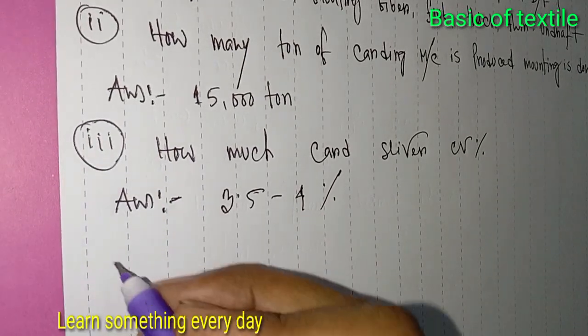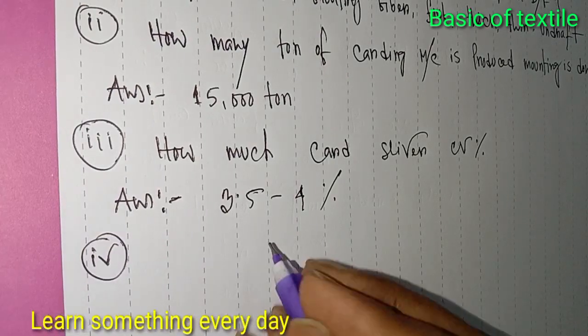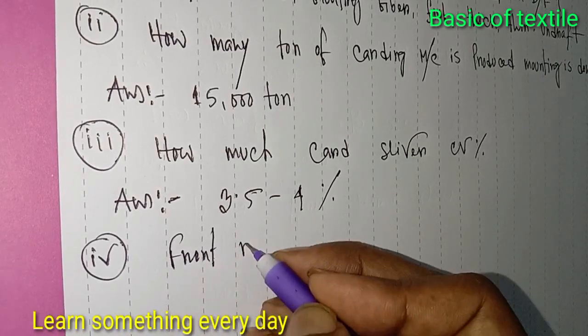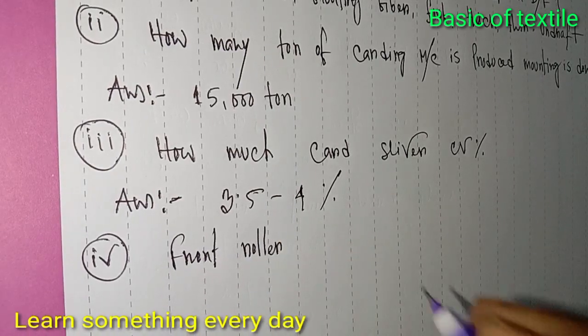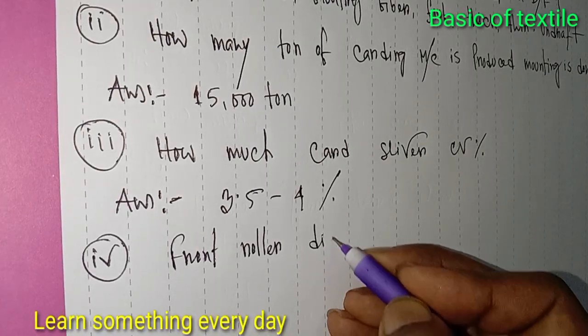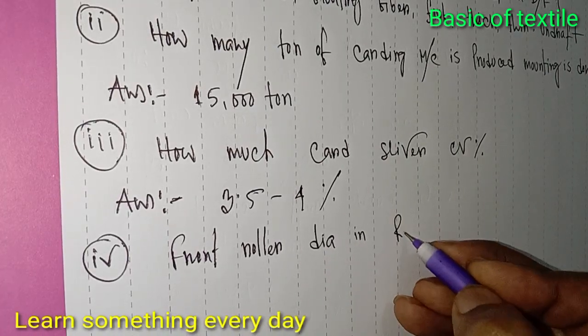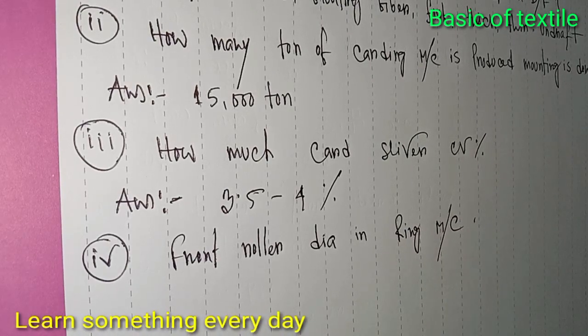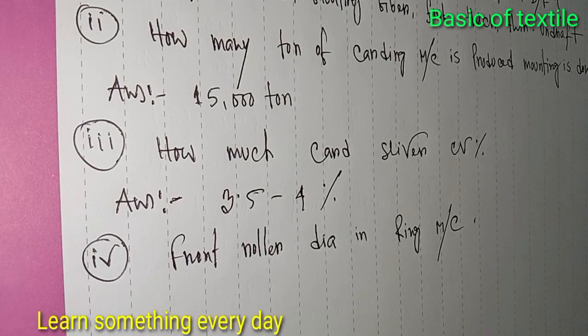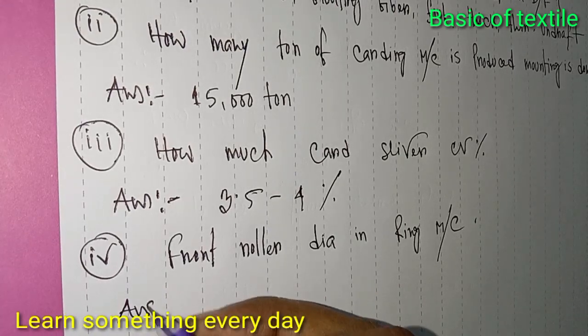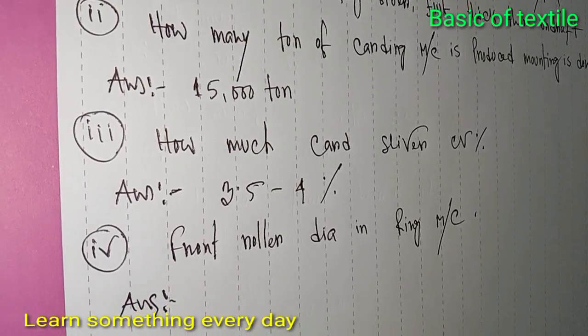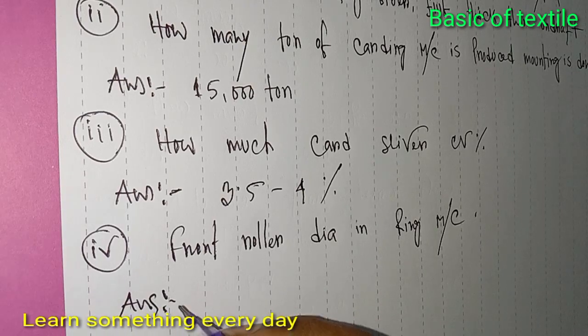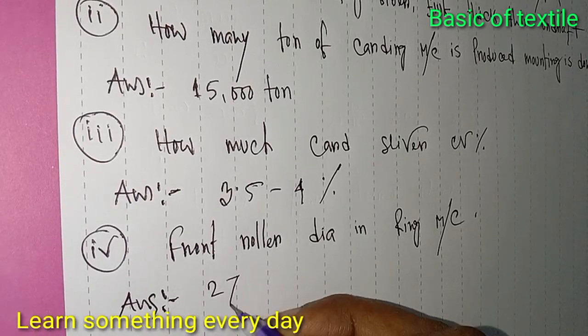Number four: Front roller diameter in ring machine. Answer: 27 millimeter.